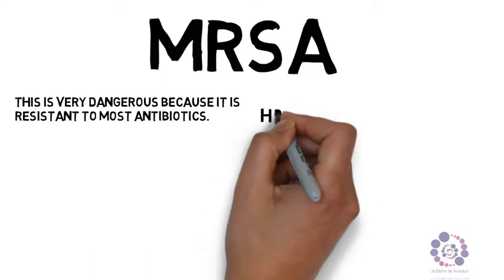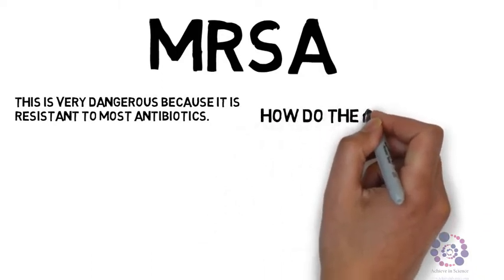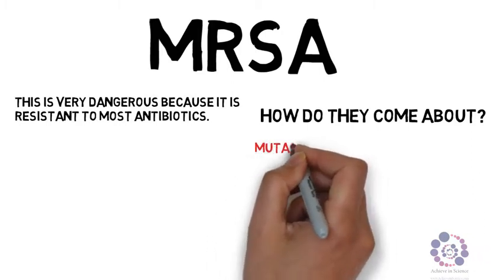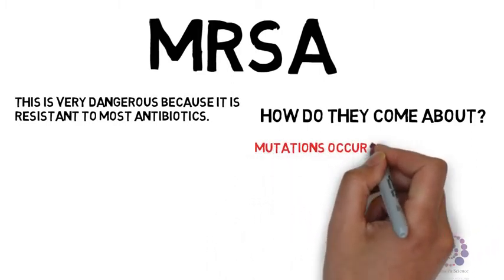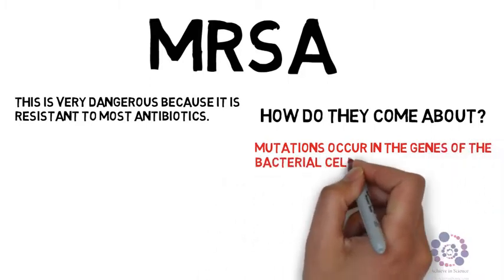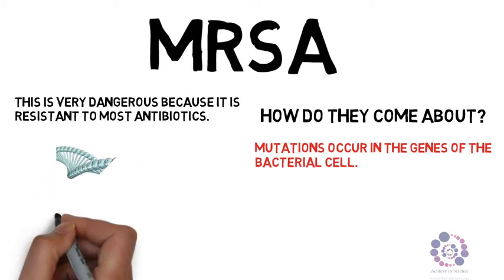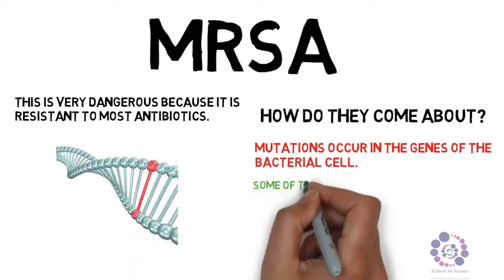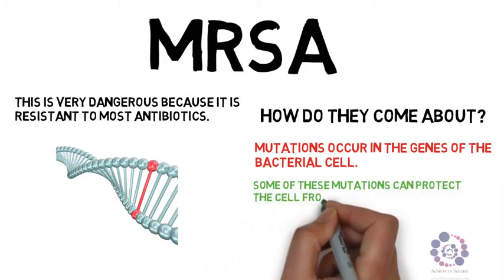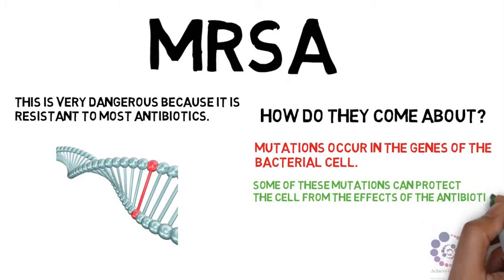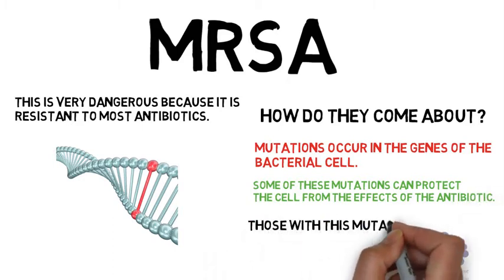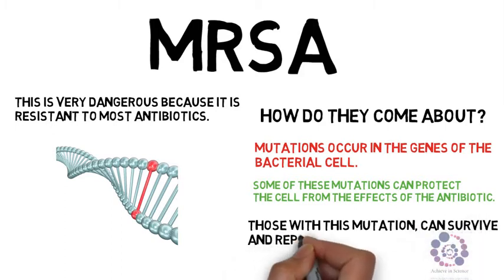How does it come about then? Well, when bacteria survive, mutations can occur in the genes of the bacterial cell. This is where the DNA changes. Some of these mutations can protect the cell from the effects of the antibiotic. Those therefore with this mutation are able to survive, reproduce, and encounter less competition from normal bacterial strains.